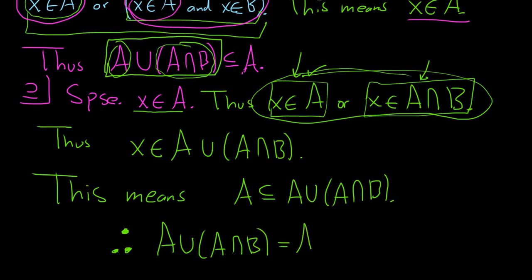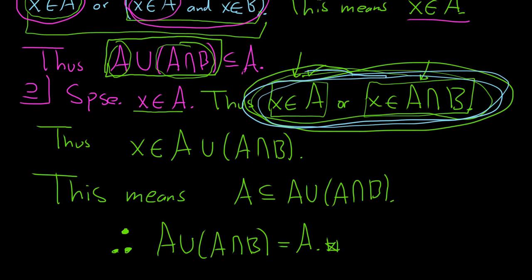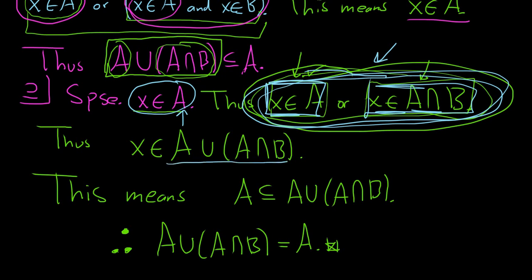So we've shown the two sets are equal. I hope this proof has made some sense. The trickiest part is understanding when this entire statement — I'm circling it in blue — is true. It's true if the first condition is true, if the second condition is true, or if they're both true. We had X in A, so the first condition is true, therefore the entire statement is true, which is what we wanted — for X to be in the union. I hope this video has helped you improve your proof writing skills.